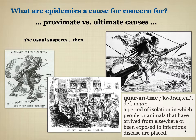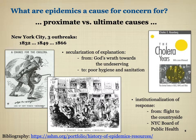One important distinction: there was a difference between proximate causes — the poor, the unclean, immigrants — and ultimate causes. In the early 19th century, the ultimate causes of disease were often framed in religious and moral terms. Charles Rosenberg's work The Cholera Years examines three outbreaks in New York City: 1832, 1849, and 1866 — showing how in the same city across three outbreaks, the reaction changes not just because the outbreak differs, but because people's ideas about disease and whose responsibility it is to deal with it are also changing.